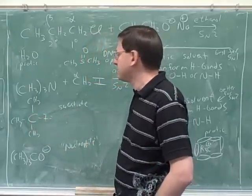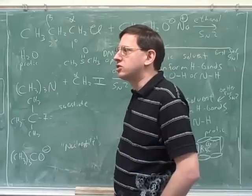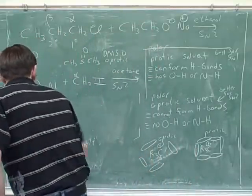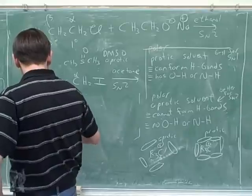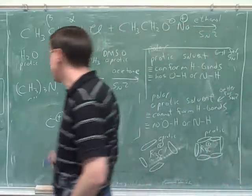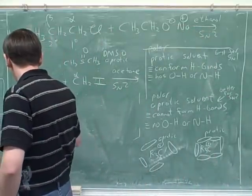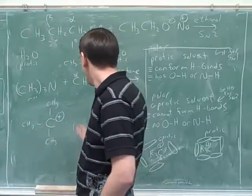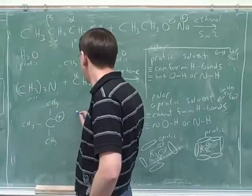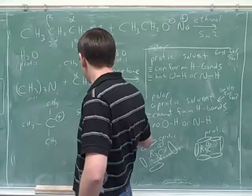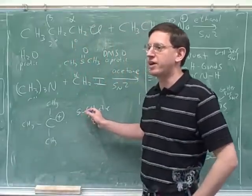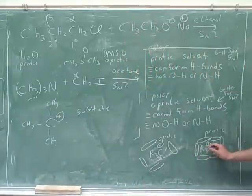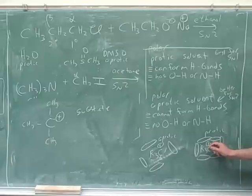The big obstacle to SN1 was stabilizing the carbocation. We've seen two things that can stabilize a carbocation. The most important is putting in as many alkyl groups as possible — so a highly substituted carbocation is a very happy carbocation. The substrate can stabilize itself by being substituted — this is by far the most important factor. The other thing that can stabilize the carbocation is the solvent.